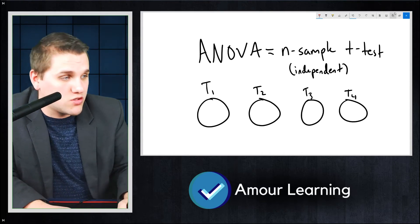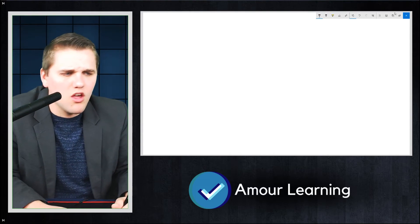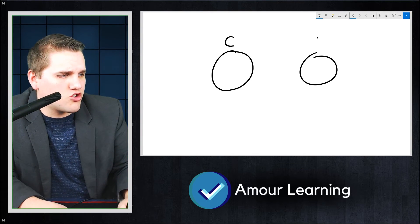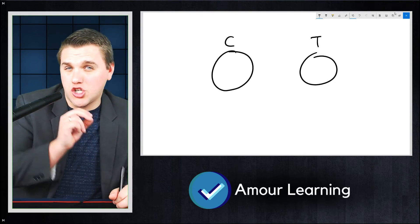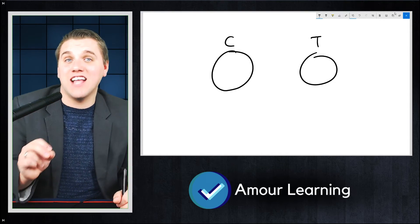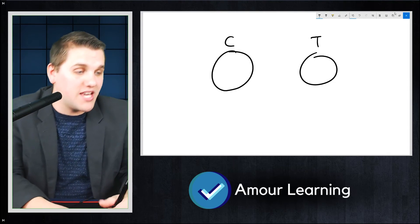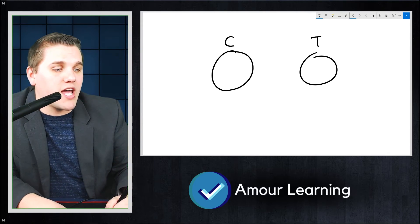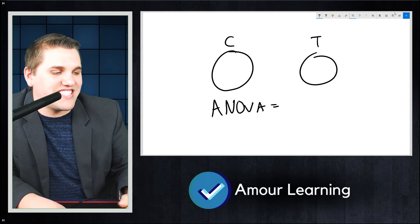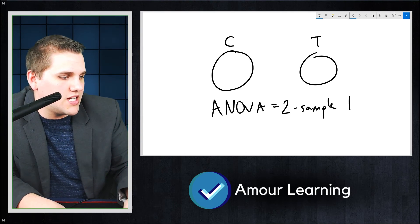I've always gotten this really good question: what if you have two samples, a control group and a treatment group? Do you use the two-sample t-test or do you use the ANOVA test? And it turns out the answer is it doesn't matter because the results are literally going to be exactly the same thing. So when it comes to two samples, the ANOVA test is the same thing as the two-sample independent t-test.